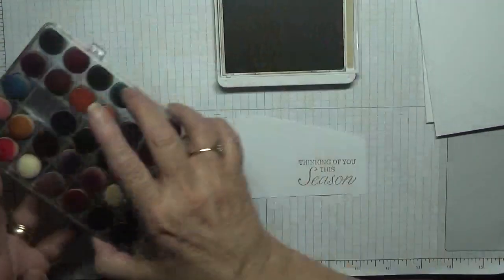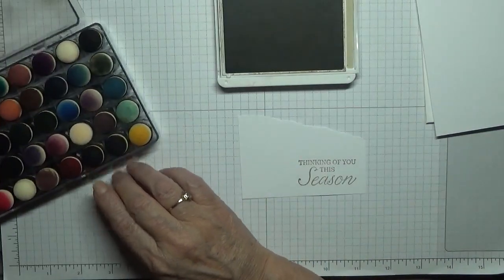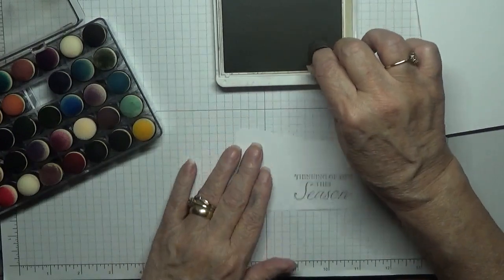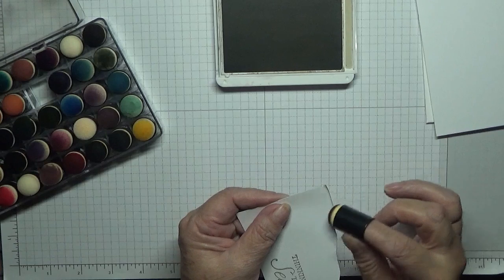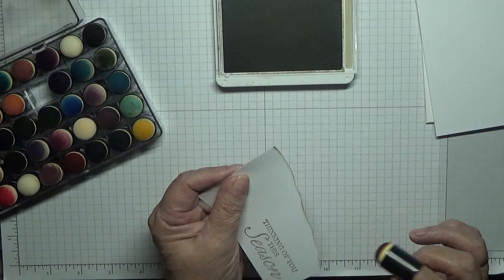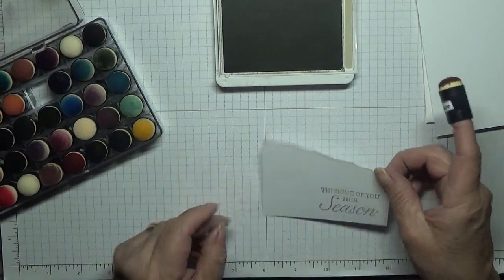Then we're going to get a dauber. Crumb cake one. And we're just going to go over the edge in crumb cake. You might think this is all weird but it all comes together. Like that.